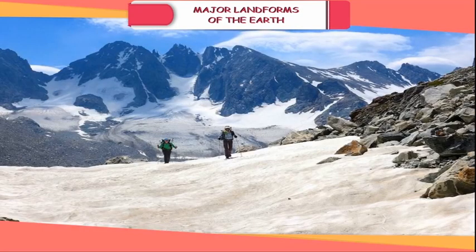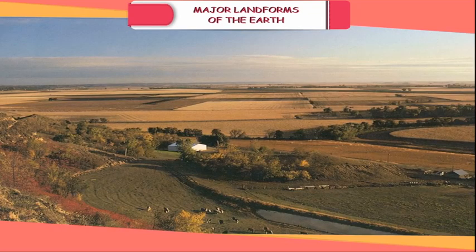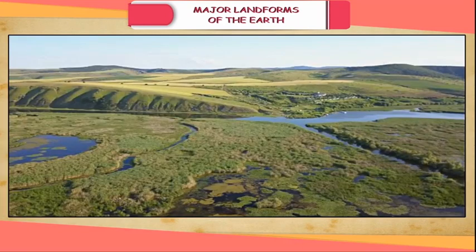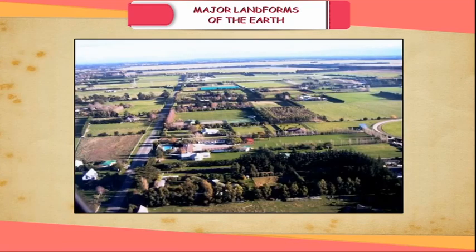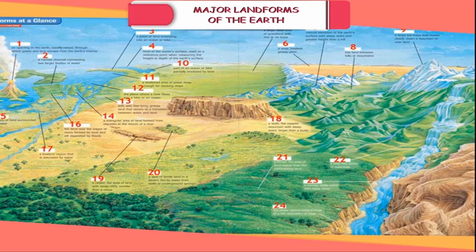Plains are also formed by the movement of glaciers and wind. Generally, plains are very fertile and support a huge population. They are very thickly populated regions of the world. Some of the largest plains made by rivers are found in Asia and North America. The high concentration of people in plains is due to availability of land for building houses as well as fertile area for cultivation of crops.